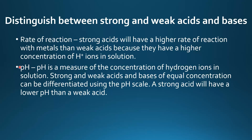Next is pH. pH is a measure of the concentration of hydrogen ions in solution. Strong and weak acids and bases of equal concentration can be differentiated using the pH scale — a strong acid will have a lower pH than a weak acid, provided they are the same concentration.